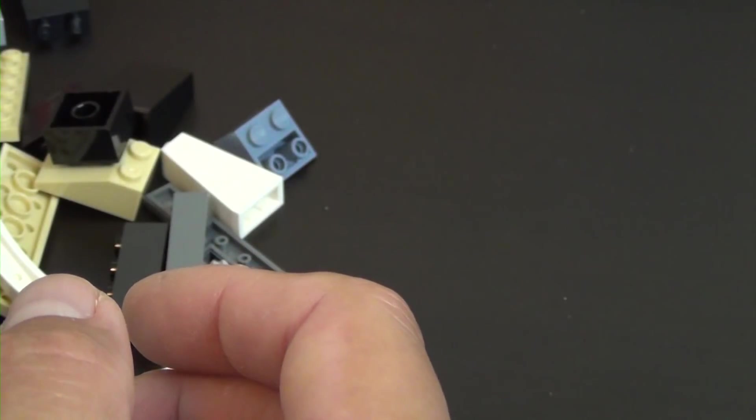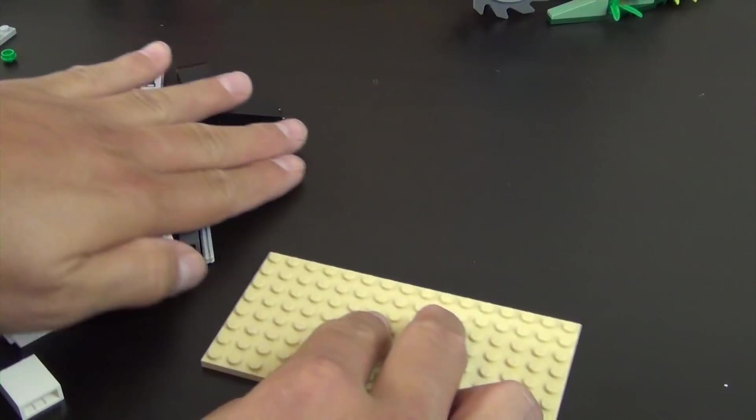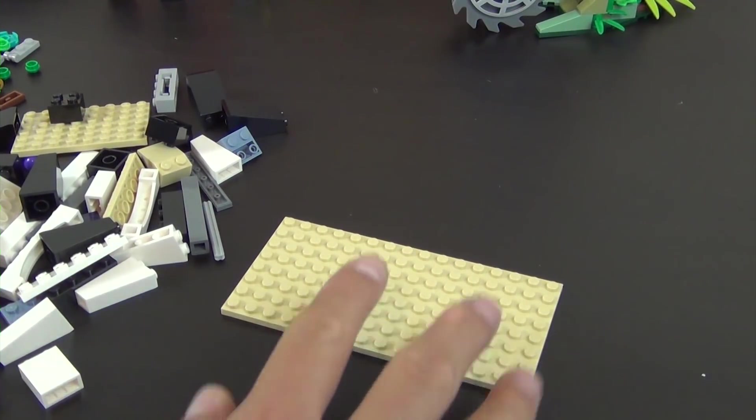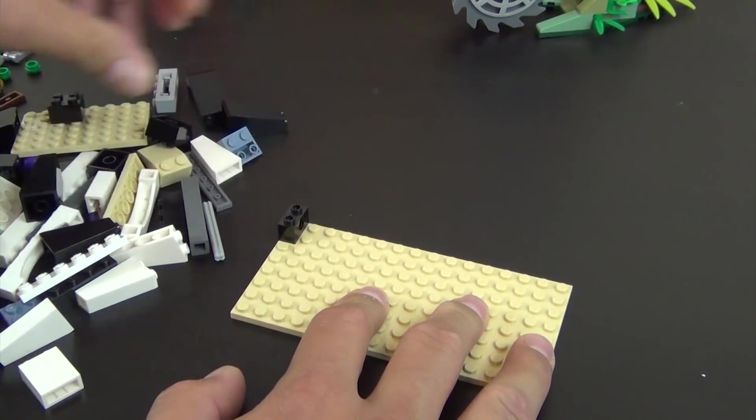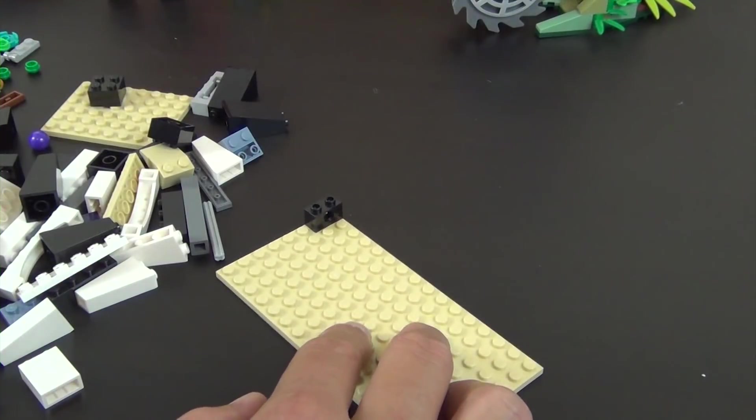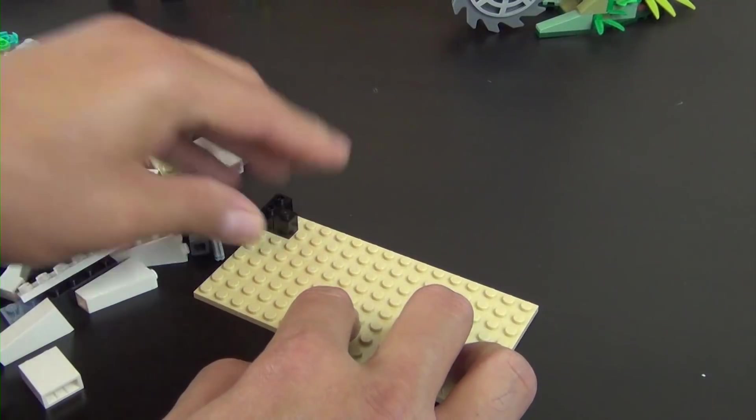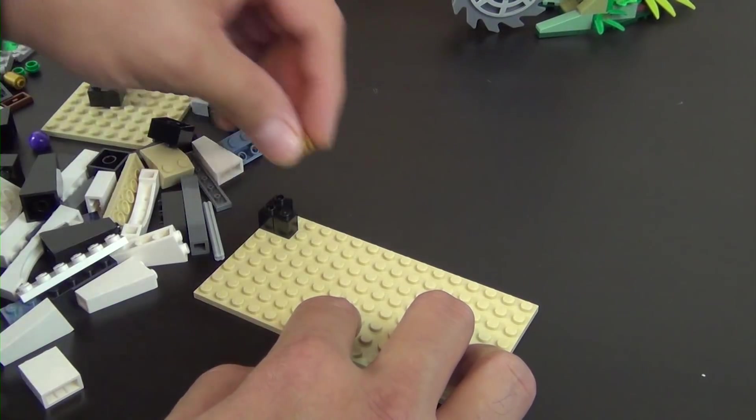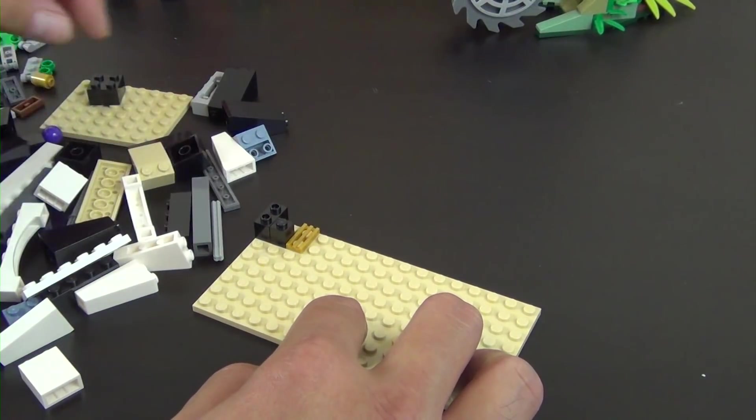So that is that minifigure. Move him to the side. Now we're going to begin the build of our wall section. We'll start with this 8x16 tan plate. This is the one that came loose in the box. Add a technic brick there. And we're just going to start stacking bricks, plates, tiles, whatever else we have on here.